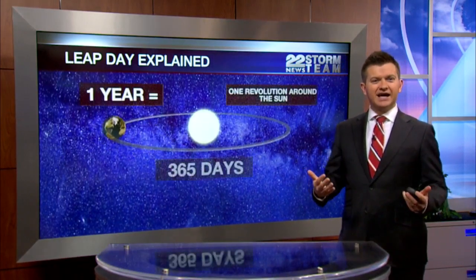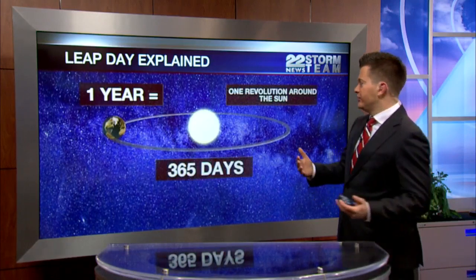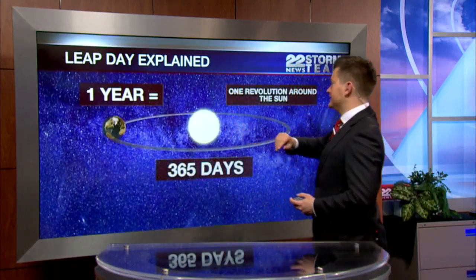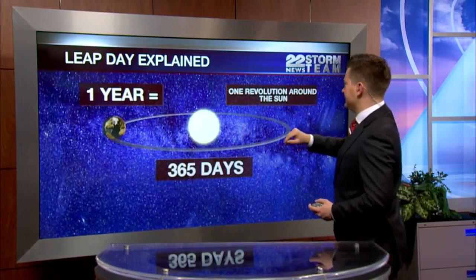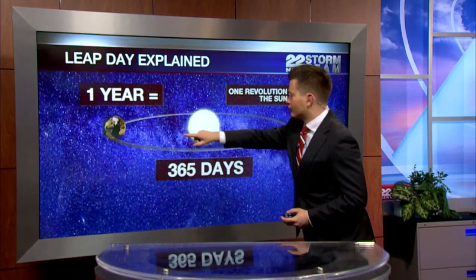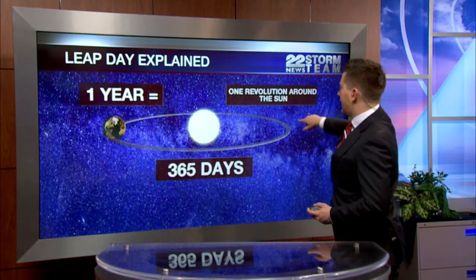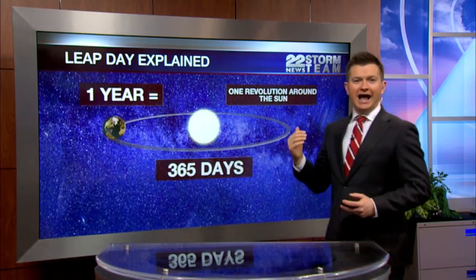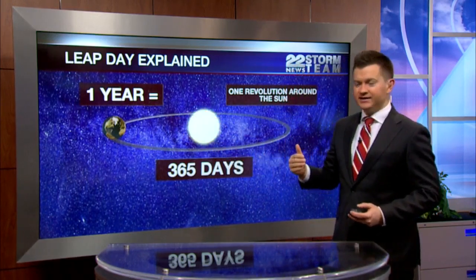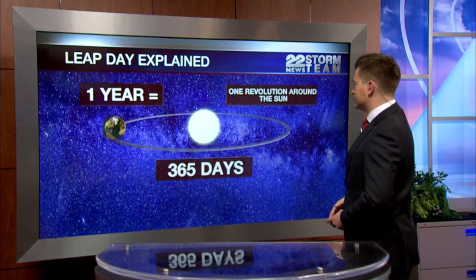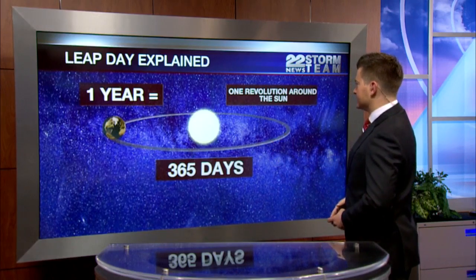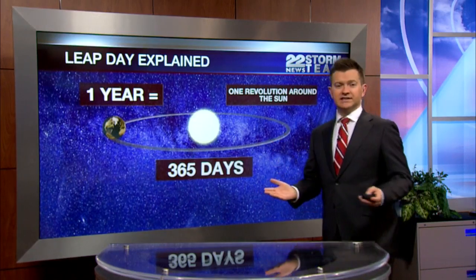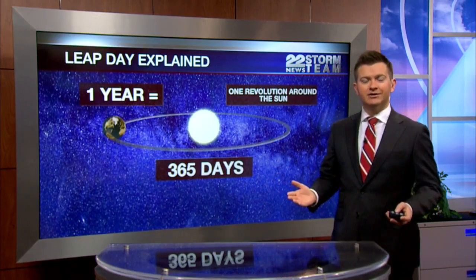Let's go back and get a little sciencey. The way that one year is determined is it's the revolution of the earth around the Sun, and how long that takes — and that takes roughly 365 days. So we have 365 days a year.